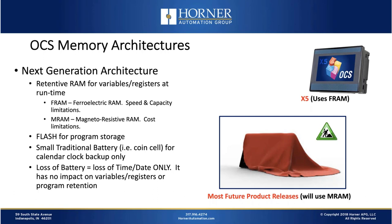If that coin cell battery were to fail ten years from now, the only thing you lose is the current time and date — a real advantage. The X5 uses FRAM for its variables. If you compare the X5 spec sheet to the XL4, even though they have a very similar processor, the X5 has a much more limited register complement because it uses FRAM. The XL4 supports 50,000 general purpose registers while the X5 supports only 5,000 — mainly because it utilizes FRAM.